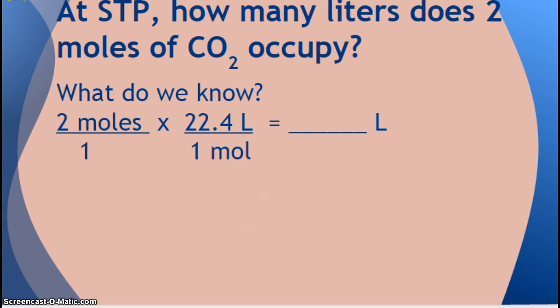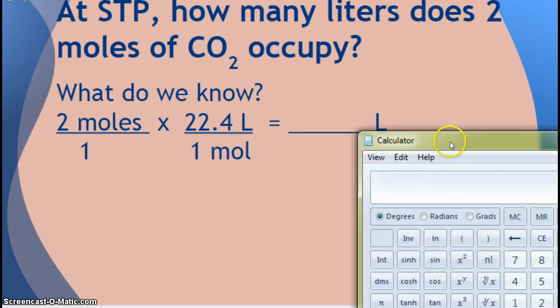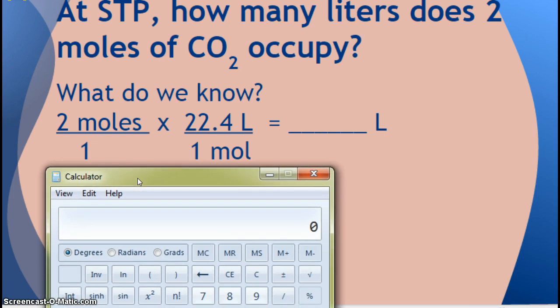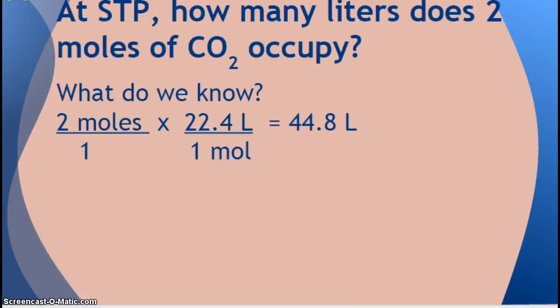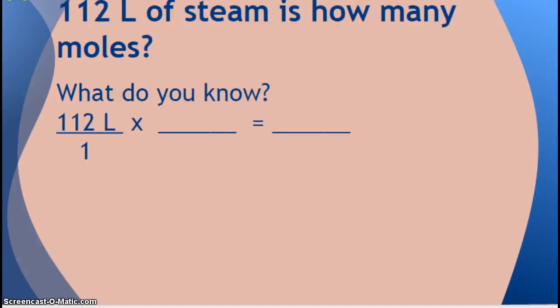All right. So then, in your calculator, you are going to multiply everything across the top. So we have 2 times 22.4. And our answer will be 44.8 liters, in this case, of CO2 gas. As always, make sure you're pausing when you need to, rewind when you need to, and write down what you need to.